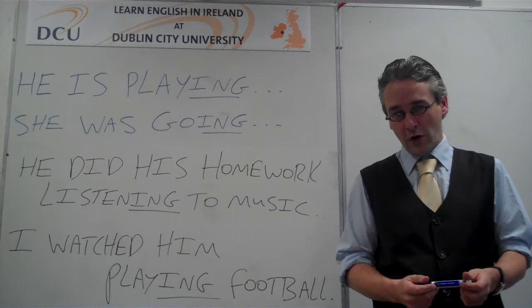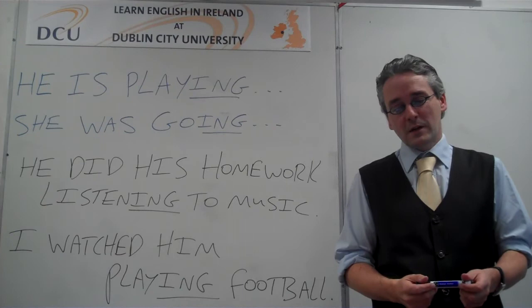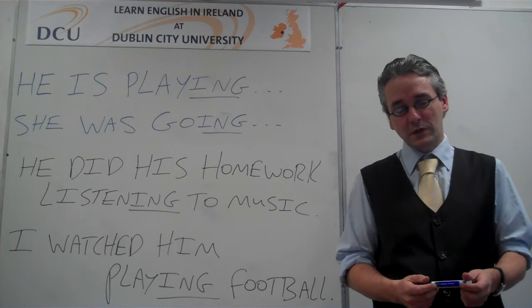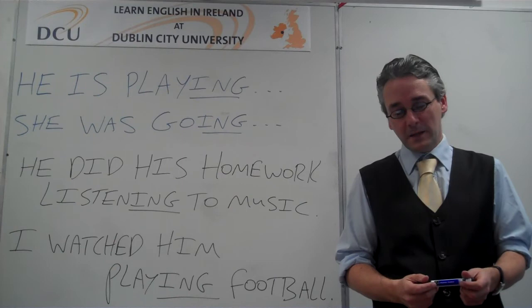Basically, participles have two forms: present participle and past participle. The present participle is formed by adding -ing to the root form of the verb. So, play becomes playing and go becomes going.